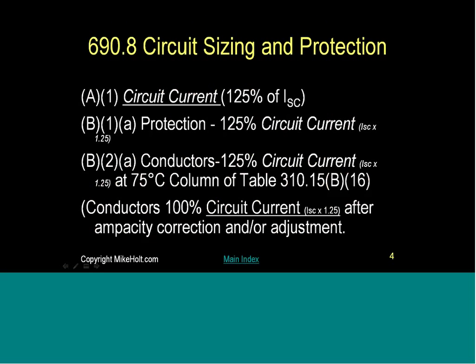In 690.8 there are three areas that are particularly important. 690.8 A1 has to do with the circuit current — we have to start conductor sizing and protection based on a specific current, which is 125% of the module short circuit current (I_sc). Then 690.8 B1A has to do with how you size the protection device where required, which is 125% of the circuit current. The circuit current is the short circuit current times 1.25, and then we size the conductors.